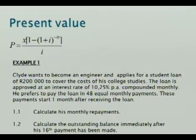The loan is approved at an interest rate of 10.25% per annum compounded monthly. He prefers to pay the loan in 48 equal monthly payments. These payments start one month after receiving the loan. Grade 12, please look at that: one month after receiving the loan. You don't do anything.